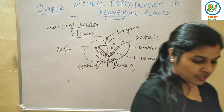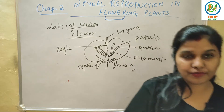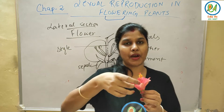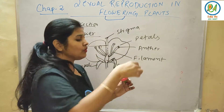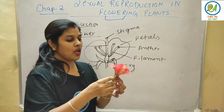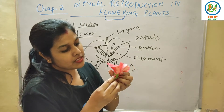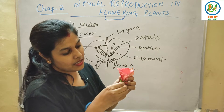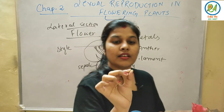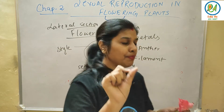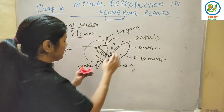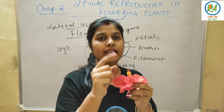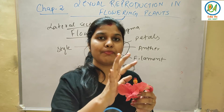I have a hibiscus flower with me. This part is the petal. This very small green one is the sepal. And here you can see the stigma. I will tell you the function of each and every part — first let's identify all the parts.